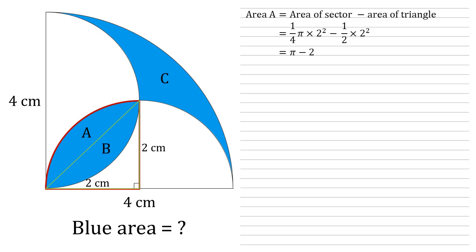Simplifying this, we have a quarter times two squared, so that's one, so that's π. The area of the triangle is two. So the area of the segment A is π minus two.